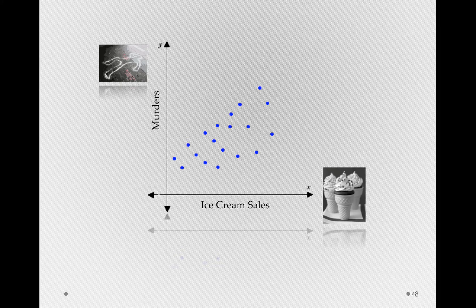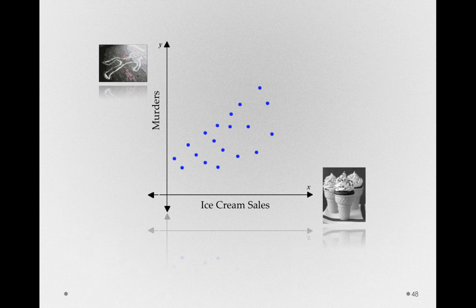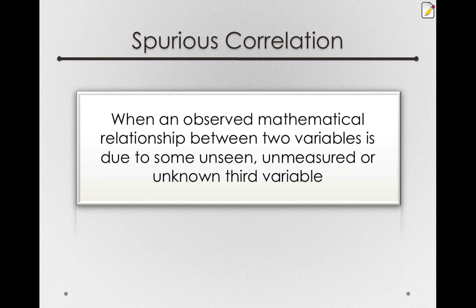Hopefully you came up with some good reasons why we might observe such a relationship when in fact ice cream is not the cause of the murders. One commonly attributed explanation is that cities with higher average temperatures tend to have more murders, and cities with higher average temperatures also tend to have higher ice cream sales. We could even observe this effect within a single city — those months with the most murders tend to be the hottest months, which are also the months with the highest ice cream sales. What we've observed here is a spurious correlation, when an observed mathematical relationship between two variables is due to some unseen, unmeasured, or unknown third variable. The third variable in that case would be the temperature of the city.